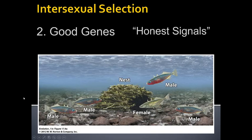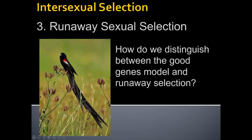It's still somewhat of an honest signal even if small males can fake it a little. Good genes — the hypothesis that honest signals of health can convince a female to mate — is only possible if the male can honestly convey his health status. Sometimes when intersexual selection is at play, we get runaway sexual selection, which is when female choice just drives the male's phenotype to an extreme.